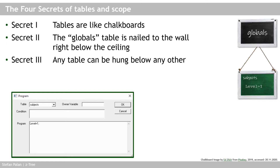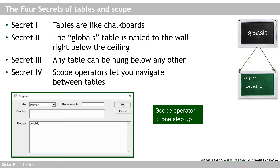Secret four: scope operators let you navigate between tables. The first scope operator is the colon. It allows you to move upward to chalkboards hung higher on the wall. If I fill the variable 'level' with zero but prefix the variable name with a colon, Z3 modifies this variable not on the current chalkboard (the subjects table), but one chalkboard higher up — which in this case is the globals table chalkboard.